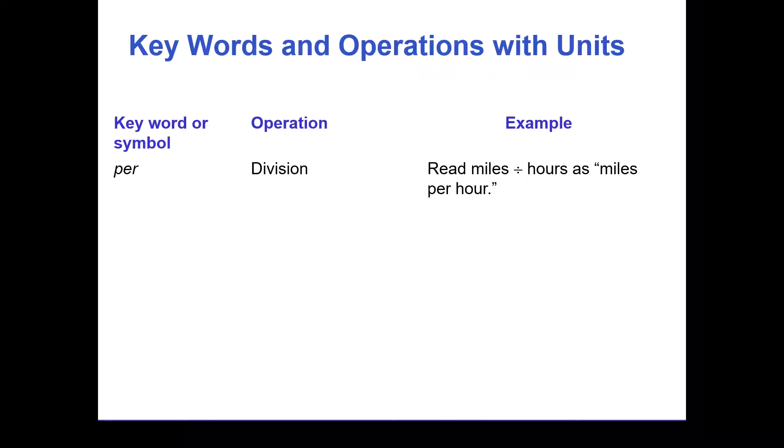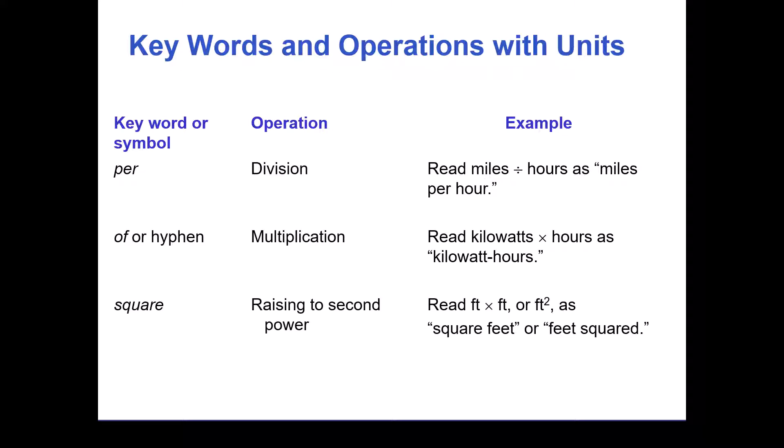Let's think about what some of the keywords and the mathematical operation that goes with it would look like. Per means division, so miles per hour is miles divided by hours. Of, or a hyphen, is multiplication. So kilowatt hyphen hours is kilowatts times hours. Square is when you raise something to the second power, like feet times feet or feet squared. They'll say square feet or feet squared. And cube or cubic is the same thing except you're going to raise it to the power of three. That would be feet times feet times feet or feet with the exponent three. We would say cubic feet or feet cubed.